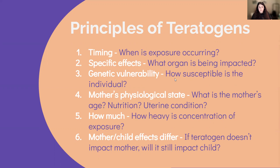Number three is genetic vulnerability — individuals differ in their susceptibility to teratogens based on their genetics. Number four is the mother's physiological state. For example, pregnant mothers are more susceptible to the effects of teratogens if they are younger than 20 years old or older than 40 years old. This is an association found in research.